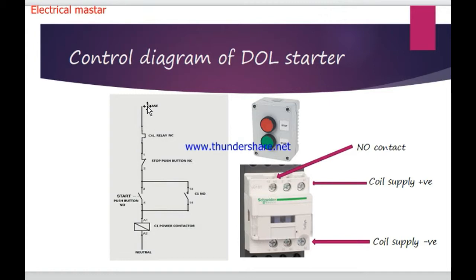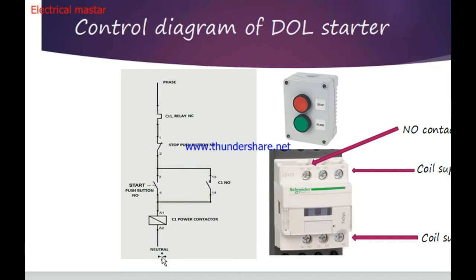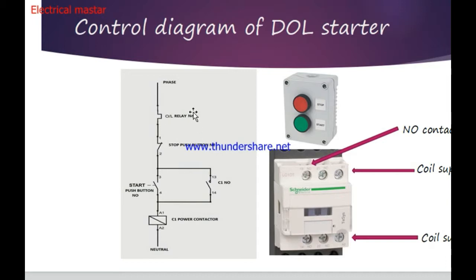Looking at the control diagram, a single-phase supply is connected to the magnetic contactor coil supply — the control supply is 240 volt phase and neutral line, a single-phase connection. In a DOL Starter we can also use 110 volt DC or 110 volt AC. At 240 volt AC, there is a phase line. The overload relay is connected via a normally closed (NC) contact, so normally when there is no fault, the NC contact is closed and connected.